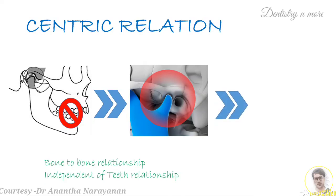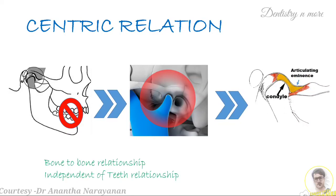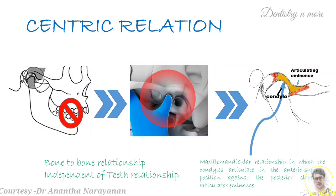When we look at the condyle and its position in the glenoid fossa, the condyles are going to be present against the anterior superior position of the posterior slope of the articulating eminence. When condyles are in this position, the mandible is in the most retruded position possible. The condyle will be against the anterosuperior position of the posterior slope of the articulating eminence and the mandible will be in the most retruded position, giving the classic definition of centric relation.